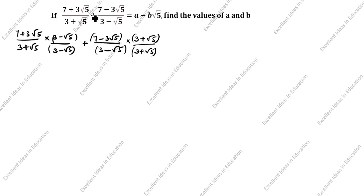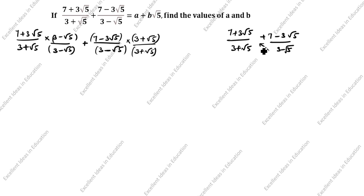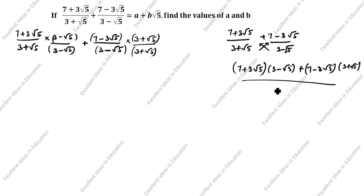This is the first method. For the second method, you see (7 + 3√5) / (3 + √5) + (7 - 3√5) / (3 - √5). You cross-multiply: (7 + 3√5)(3 - √5) + (7 - 3√5)(3 + √5), divided by (3 + √5)(3 - √5). You see both denominators are the same. So we can do it either way — whichever is easiest, you can follow.